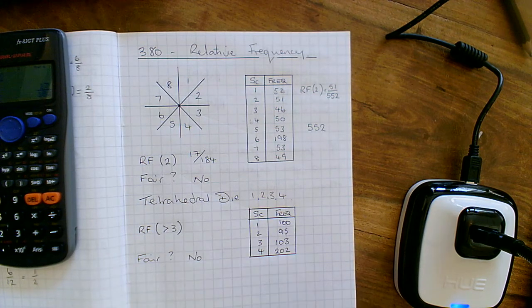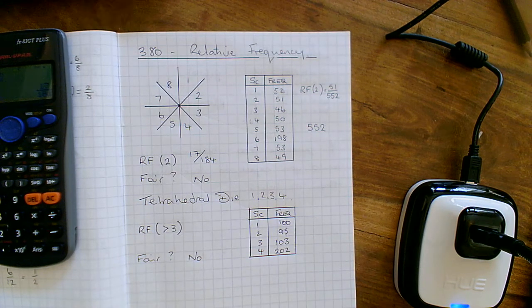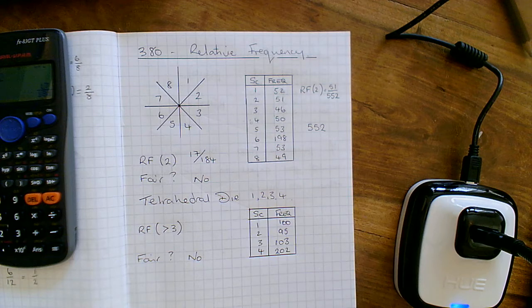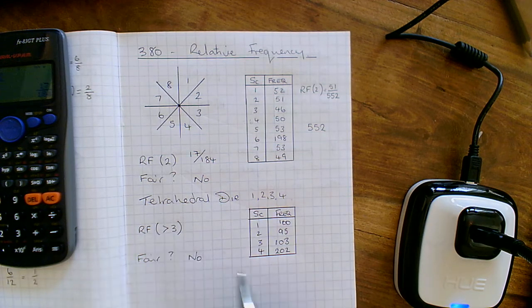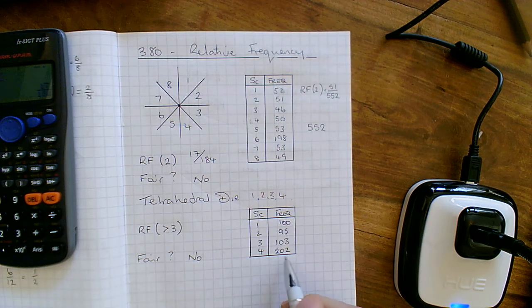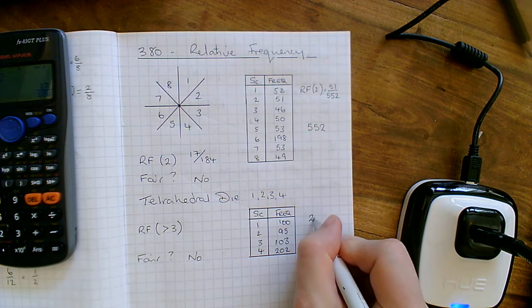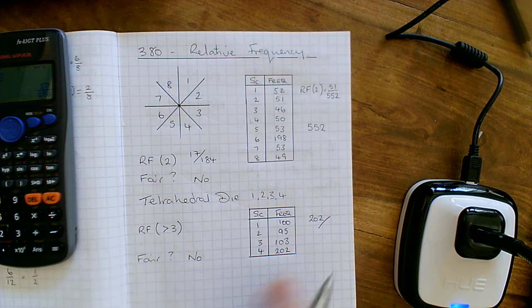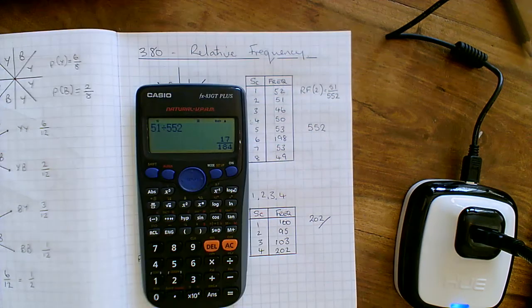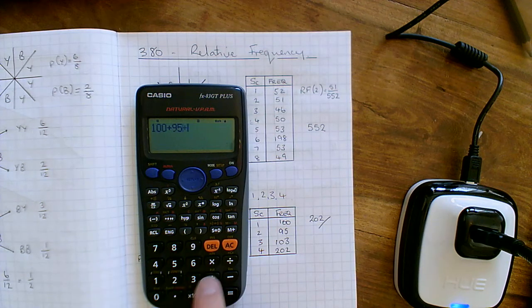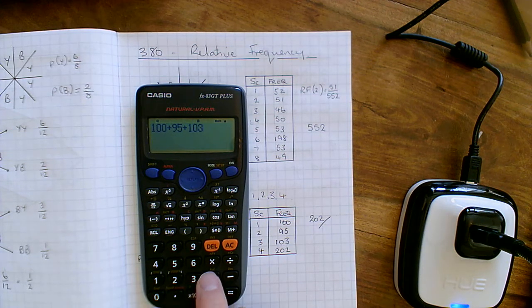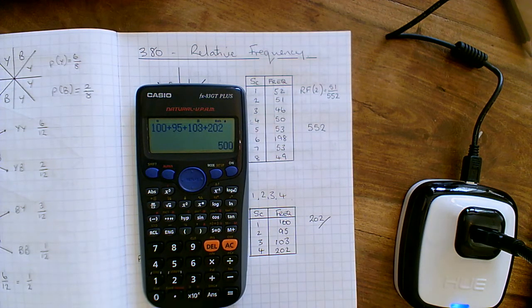If I was a betting man, I would bet on number 4 coming up. It's going to come up twice as more times than any other number. Relative frequency of getting a number bigger than 3. So bigger than 3, it has to be 4, doesn't it? So that's 202 times out of how many is it all together. So if you calculate it again, we've got 100 plus 95 plus 103 plus the 202 and it's out of 500.